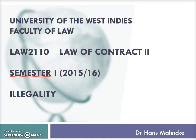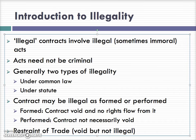Welcome to another lecture as part of the Law of Contract II course at the University of West Indies Faculty of Law. This lecture is on illegality. Illegal contracts are those contracts that involve some form of illegal act or sometimes an immoral act. These acts need not be criminal in nature; they may be tortious in nature or simply some wrongdoing in the sense of a non-indictable offence, or they may simply be immoral acts.